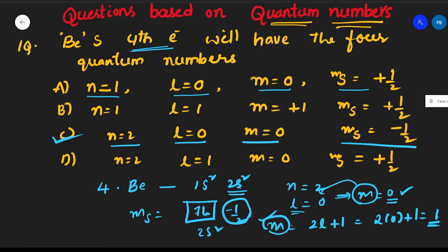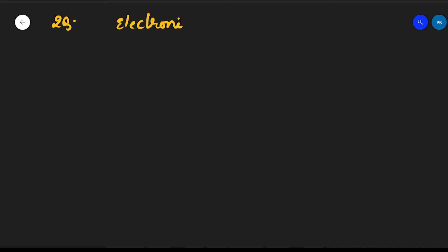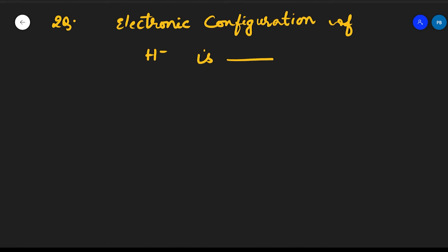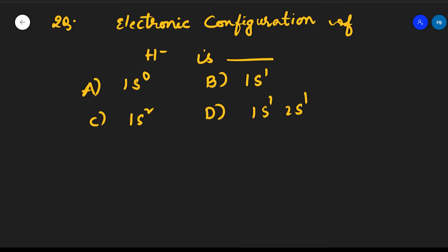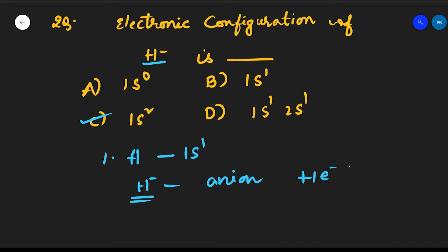The second question: the electronic configuration of H⁻ ion is? Options: A) 1s⁰, B) 1s¹, C) 1s², D) 1s¹ 2s¹. Hydrogen's atomic number is 1, so its configuration is 1s¹. But H⁻ is an anion, meaning it has one extra electron, so the configuration becomes 1s². Option C is the correct answer.